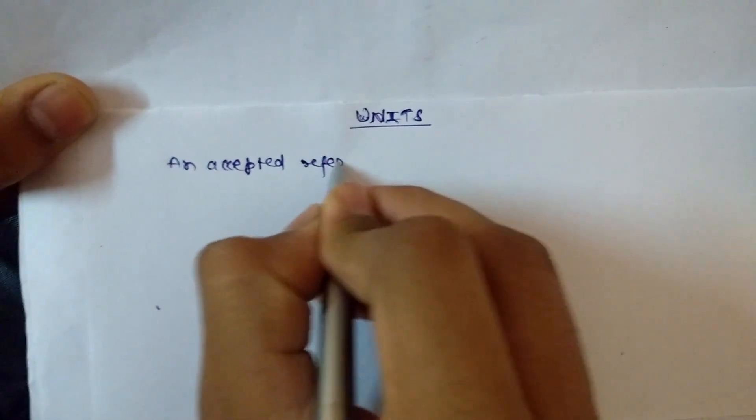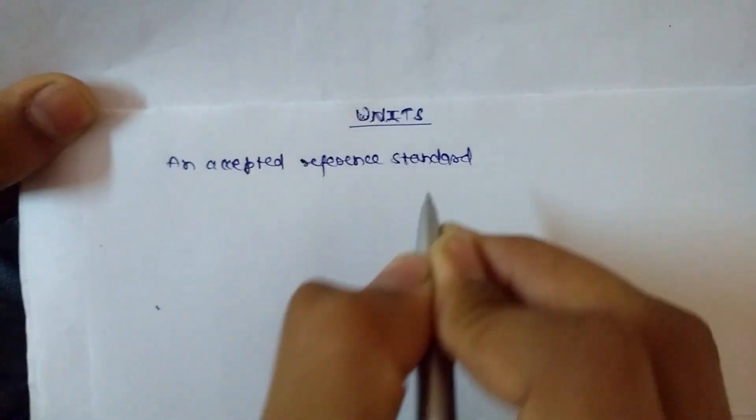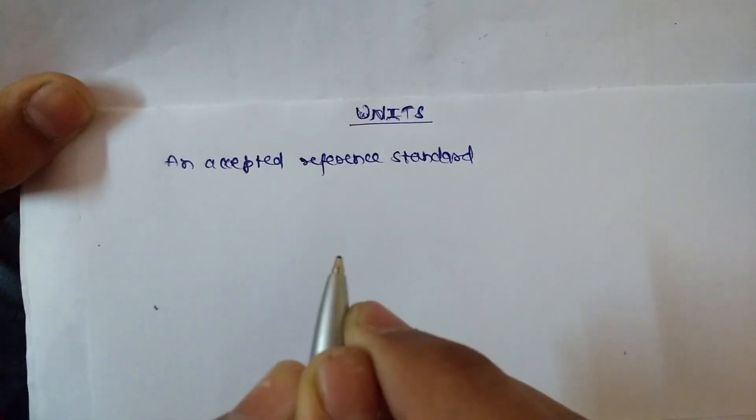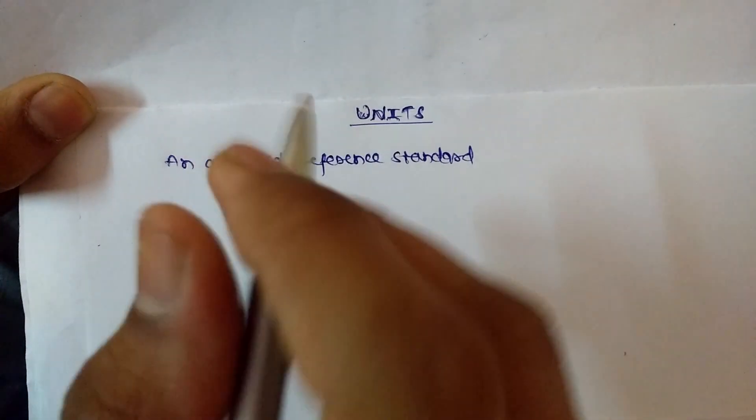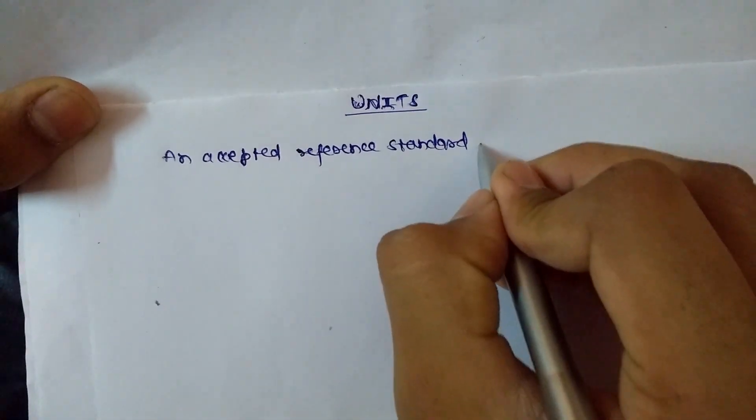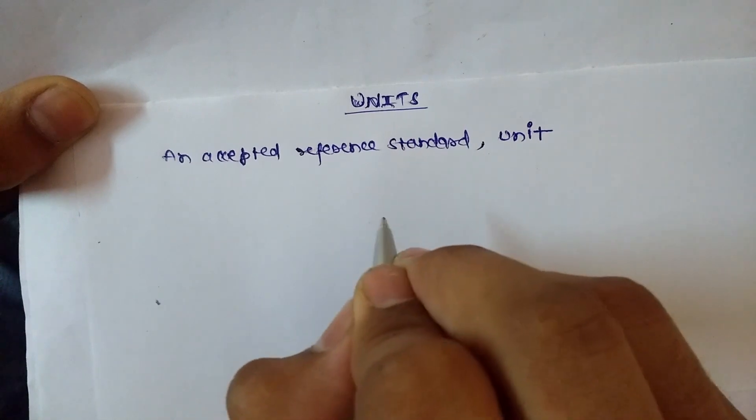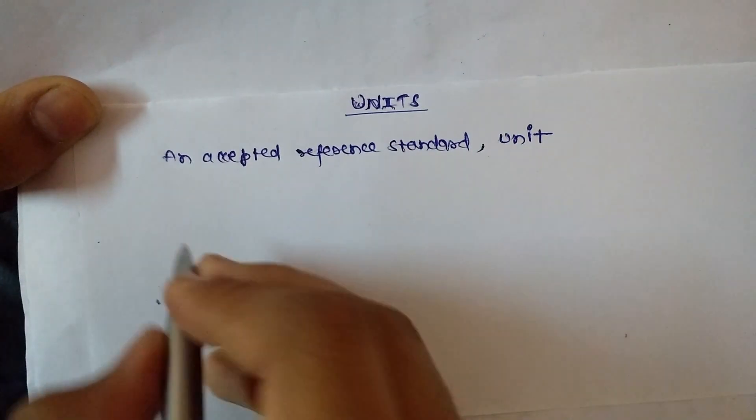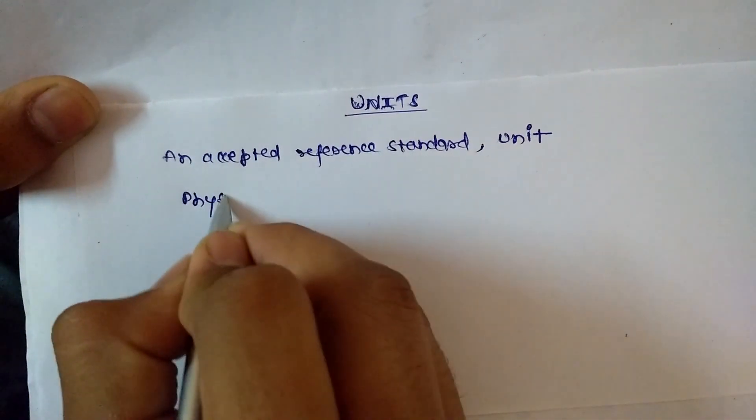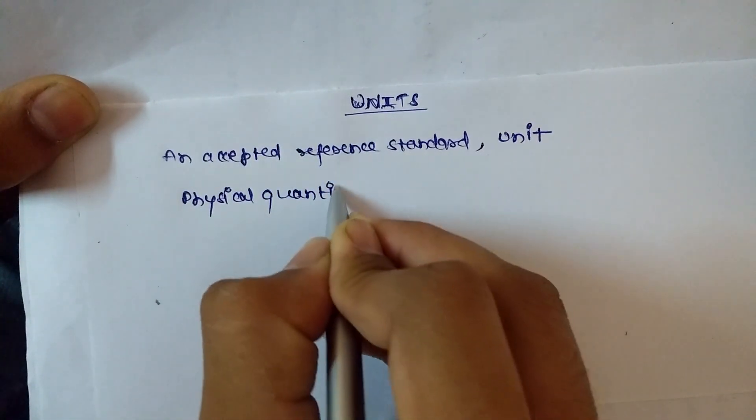Whatever physical quantity we measure, we compare it with an accepted reference standard, and that reference standard is known as a unit. When we measure a physical quantity, we represent or write it as a number.